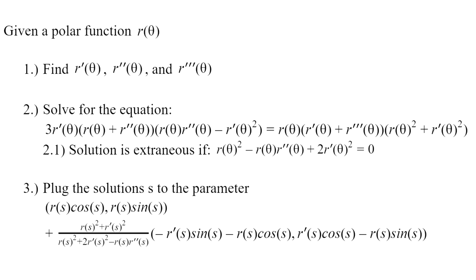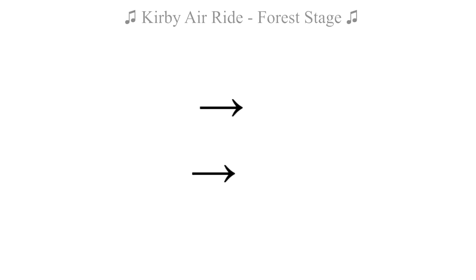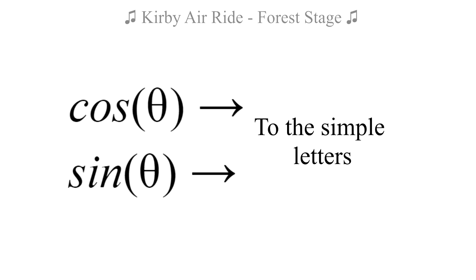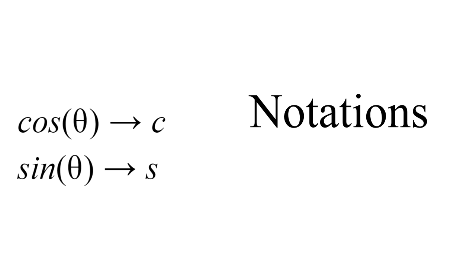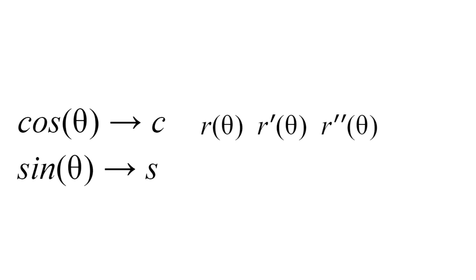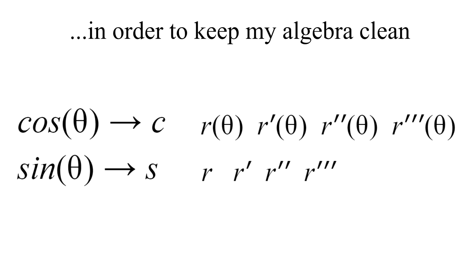Like always, I start my 3SR by first converting the trig functions cosine theta and sine theta to the simple letters of c and s, and then convert the notations of r theta, r prime theta, r double prime theta, and r triple prime theta to r, r prime, r double prime, and r triple prime in order to keep my algebra clean.